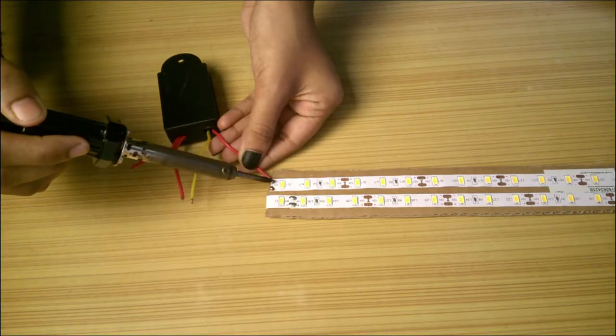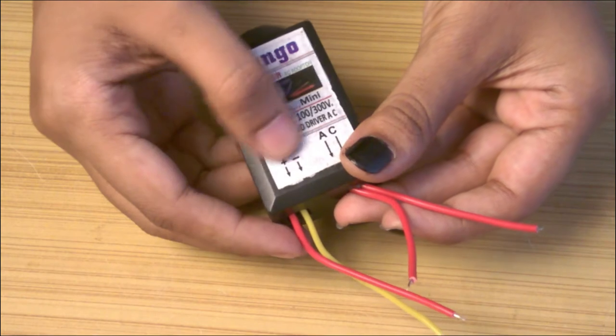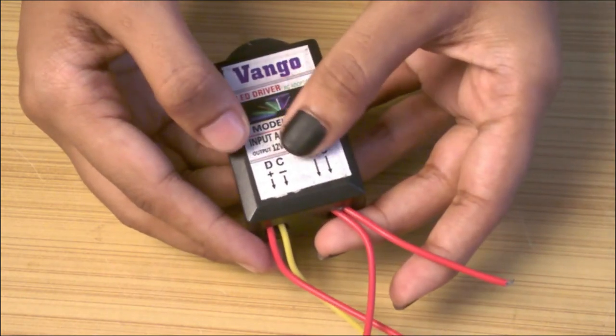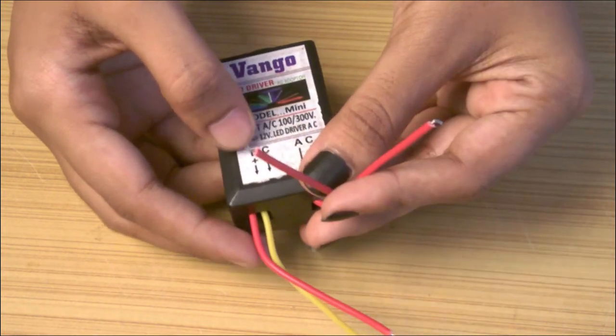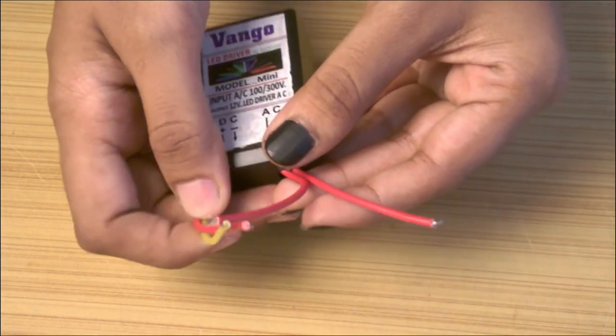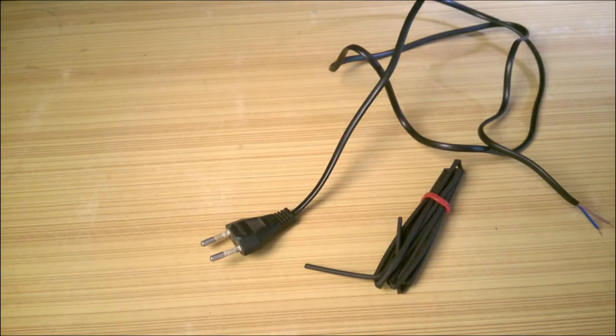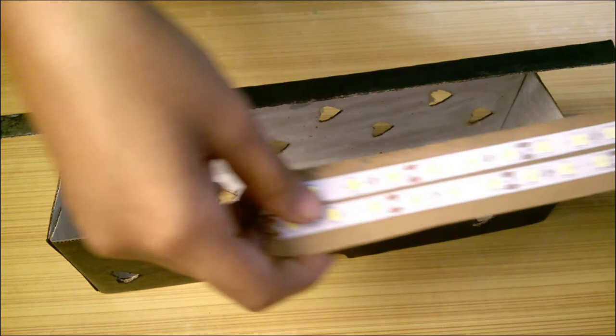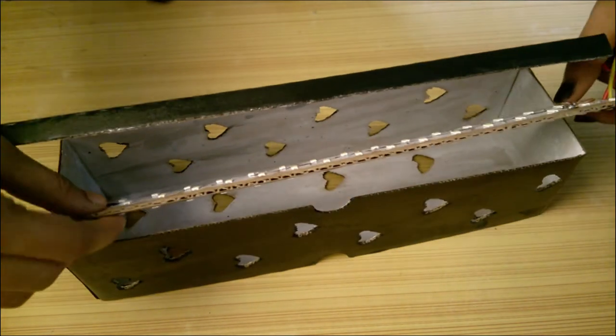Now we will connect the power supply to the strip. For that, I will solder AC input to these two wires and LED strips to these two wires. I use shrinking tubes for insulation. It's time to assemble both the pieces to make a piece of beauty.